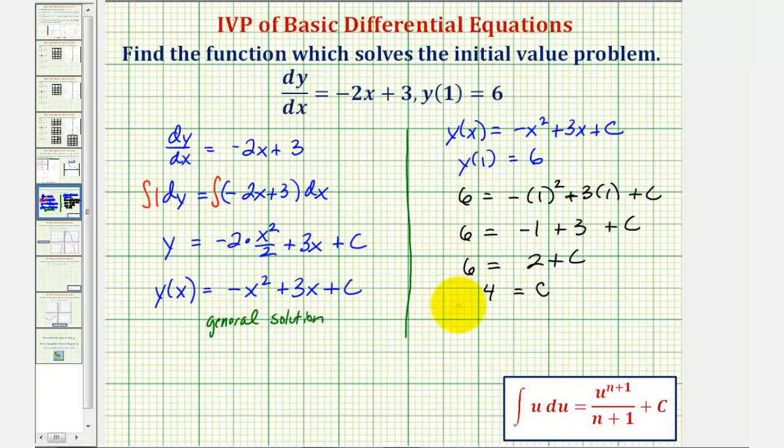And therefore the particular solution, y(x) equals -x² + 3x + 4. Again, this is called the particular solution, which is our solution to the initial value problem.